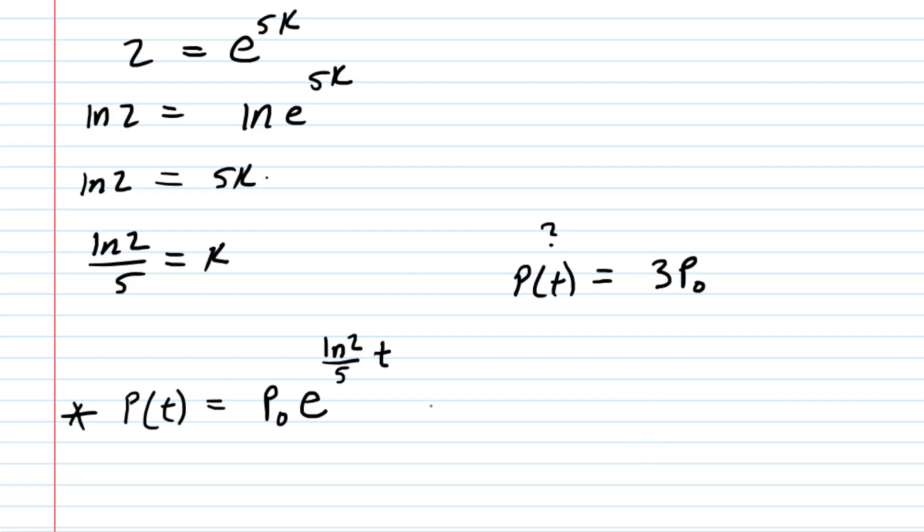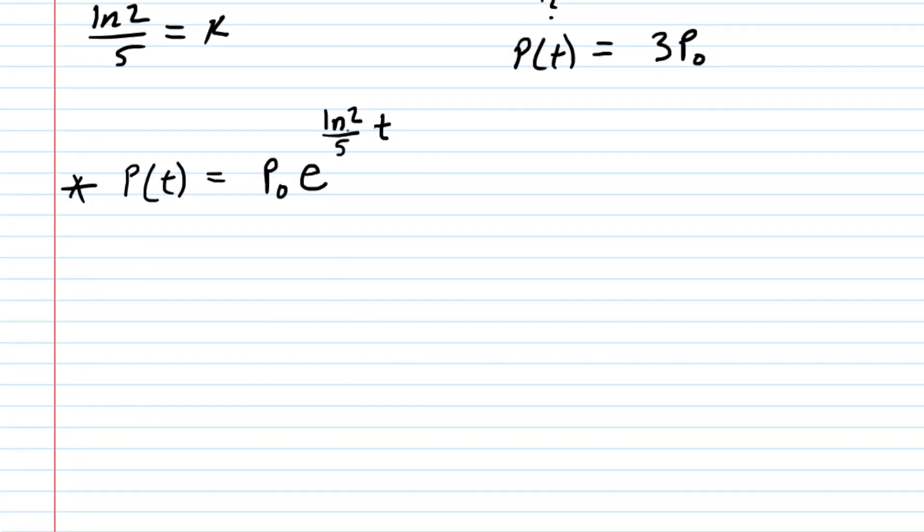So going back to our solution, to our differential equation, we've plugged the value of k in right there, and for this P(t), we shall plug in three times the initial population. Now you're already starting to see what's happening here. You've got the P0 on both sides of the equation, so you would divide both sides by P0 to cancel it out.